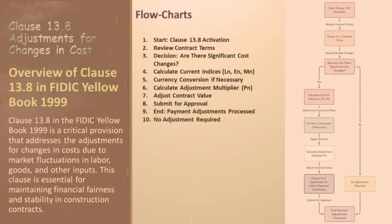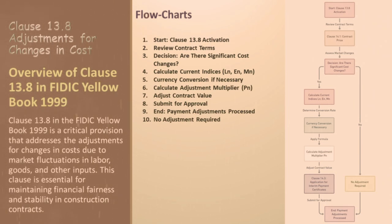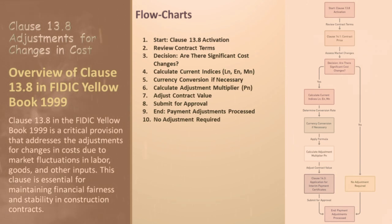The flowchart delineates a clear decision-making path based on the presence or absence of significant cost changes, ensuring that contract adjustments are made only when necessary. It provides a structured approach to handling contract adjustments — from assessment to calculation and approval of adjusted values — ensuring transparency and adherence to contract terms. The inclusion of decision nodes ensures that adjustments are made based on factual determinations, safeguarding both parties from unnecessary financial alterations.